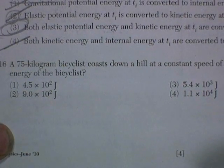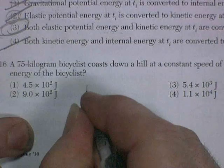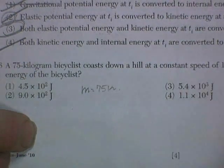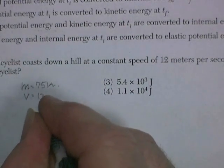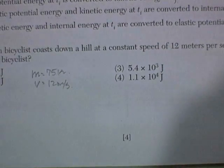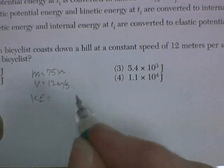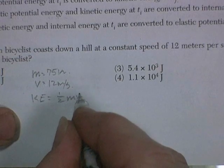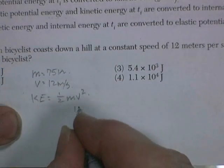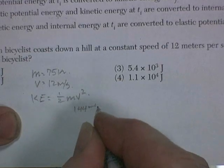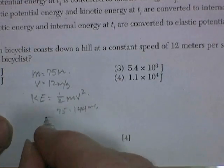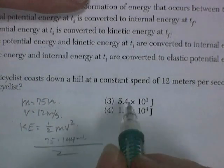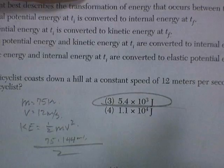Question 16. A 75 kilogram bicyclist coasts down a hill at a constant speed of 12 meters per second. What's the kinetic energy? I look it up and it tells me kinetic energy is one half mv squared. 12 squared is 144 meters per second squared. Times 75 and half of that. Let me get my calculator out. That's going to give me 5,400. Choice three.